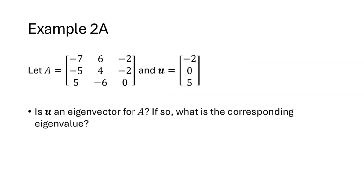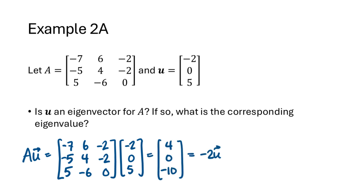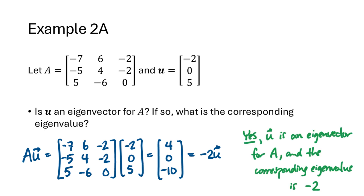Here's another example. This time we have a 3 by 3 matrix A and a vector U, and we want to know if U is an eigenvector for A. We multiply A times U and get the result 4, 0, negative 10. That's negative 2 times U, and that shows that U is an eigenvector for A, and the corresponding eigenvalue is negative 2.